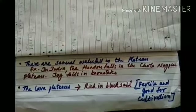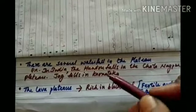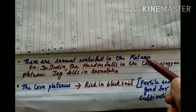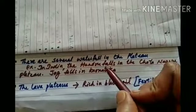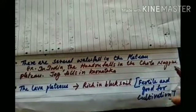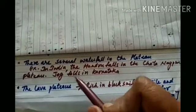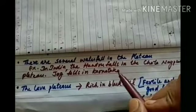There are also several waterfalls found in plateaus. For example, in India, the Hundru falls in the Chota Nagpur plateau and Jog falls in Karnataka.